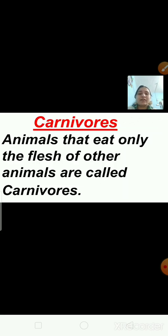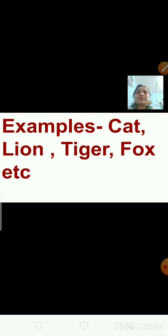Now have a look at this picture. This is the picture of a lion, then dolphins. Lion, tiger, leopard and cheetah — these are wild animals. These animals eat the flesh of other animals, so they are called carnivores. Examples are cat, lion, tiger, fox, dolphins, etc.